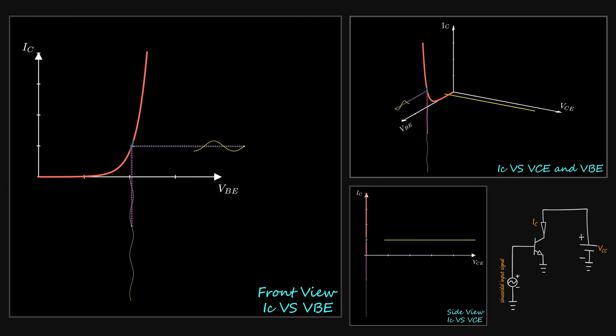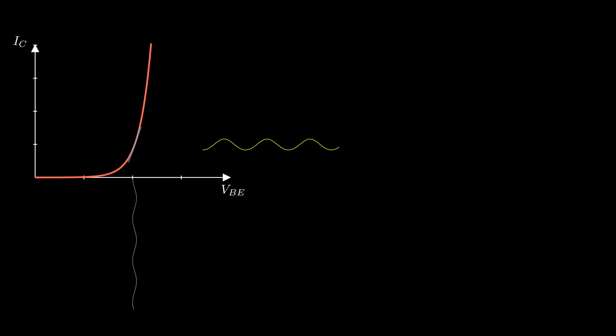We reduce the input signal until the signal sees the curve as almost a straight line, the slope of the curve at a certain point. At that situation, the output is completely sinusoidal. There is no deformation.